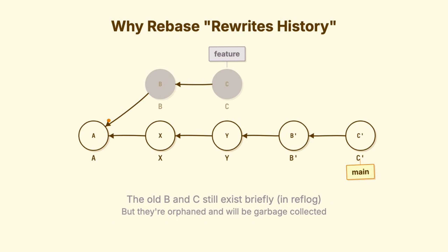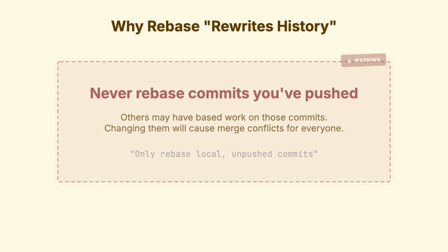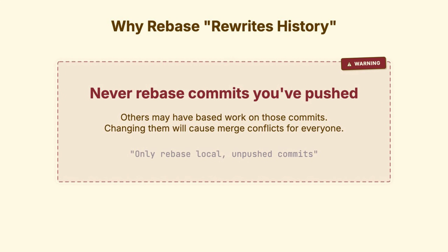This is why you never rebase commits that others have seen. If your colleague has the old commits and you push new commits with the same content but different hashes, Git sees them as completely unrelated work. Merging becomes a nightmare. Duplicate changes appear. Conflicts explode.